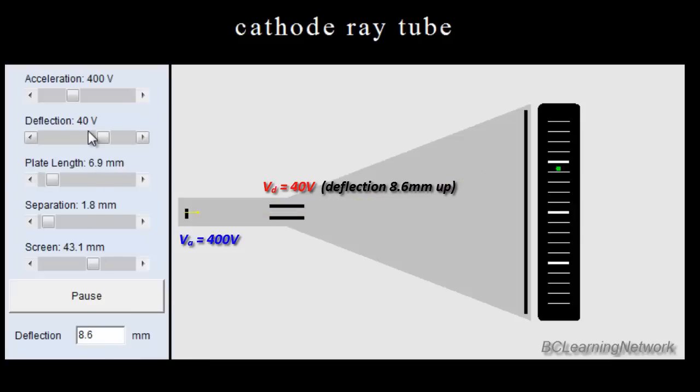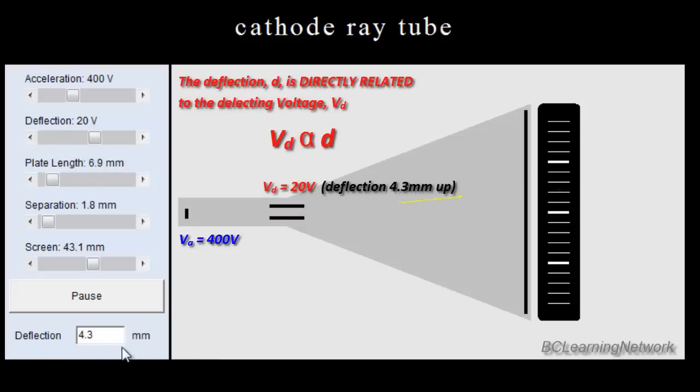So if I have 40 volts at 8.6 millimeters of deflection, 20 volts should be half of that, it should be 4.3. So if I go back to 20 and give it a chance to run, you see we're back to 4.3 millimeters of deflection, a direct relationship. Double one, you double the other. Half one, you half the other.